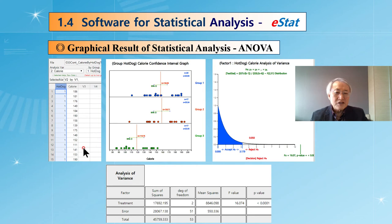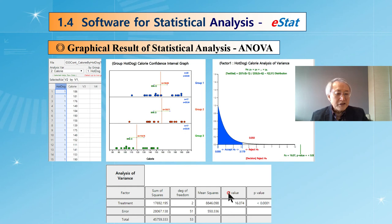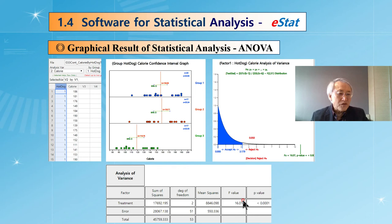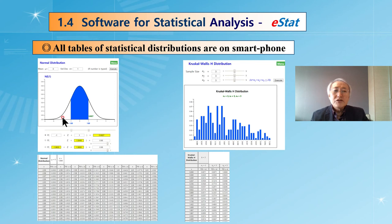Here is an example of analysis of variance. This is typical data input for a statistical package. A statistical package would normally generate only an ANOVA table, but in E-STED we also show graphical results. There are three groups; we show the data and compare the population means with confidence intervals. Rather than traditional output, we plot the observed F value on the F distribution, which has two degrees of freedom and 51 denominator degrees of freedom, so you can easily see where that value is located.